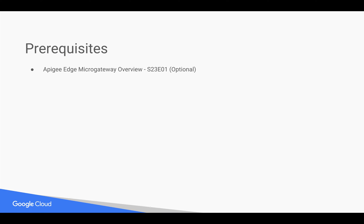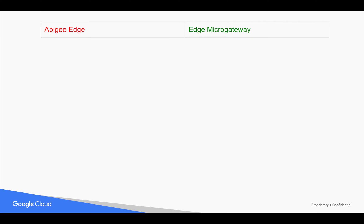Prerequisites for this video: you need to have a basic understanding of Apigee Edge Micro Gateway. You can refer to our other 4-minute videos, as well as the Apigee Edge Cloud 4-minute videos which cover the basic functionality of Apigee Edge Cloud where you can do API management. Let's see the differentiating factors between Apigee Edge and Edge Micro Gateway.